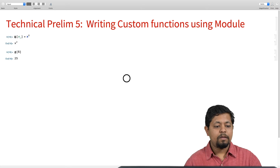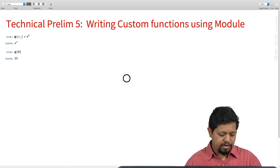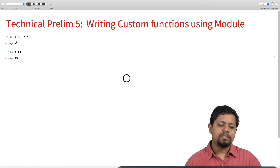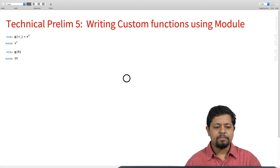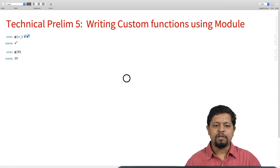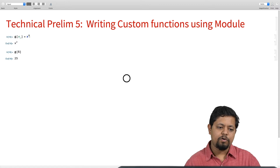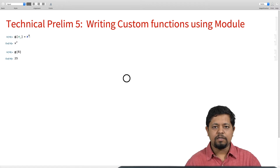This is one way of defining the function, and in this case we can define the function in one go, in one line. But sometimes a function requires multiple steps, in which case this one-line definition may not be enough and we will need to use the Module function. But before we go to Module, let us also understand the subtle difference between Set and SetDelayed.